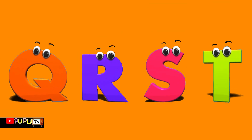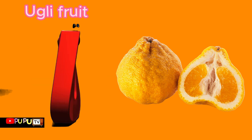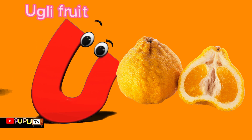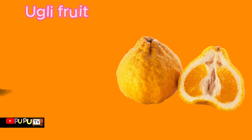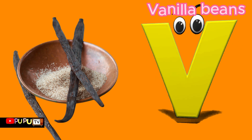U is for ugly fruit, uh-uh-ugly fruit. V is for vanilla beans, v-v-vanilla beans.